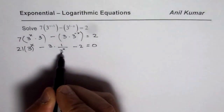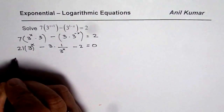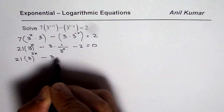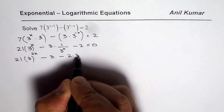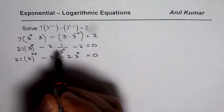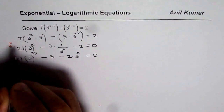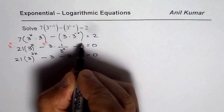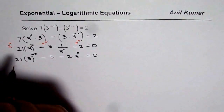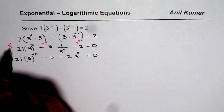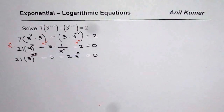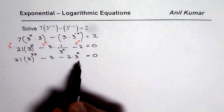Now let us multiply both sides by 3 to the power of x. In that case we get 21 times 3 to the power of 2x, minus 3, minus 2 times 3 to the power of x equals to 0. At this step we have multiplied everything by 3 to the power of x. The 1 over 3^x cancels, and you are left with 3. And 3 to the power of x times 3 to the power of x — you add the exponents — gives 2x.